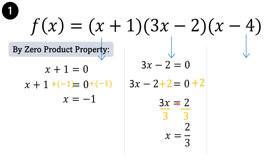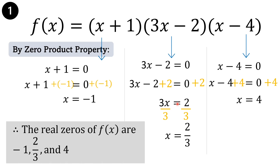Next: x minus 4 is equal to 0. By additive inverse, therefore x is equal to 4. The real zeros of f of x are negative 1, 2 thirds, and 4.